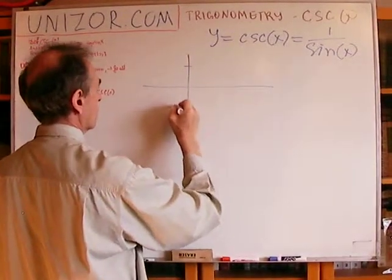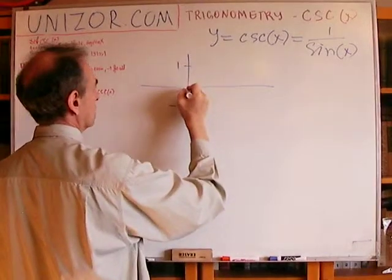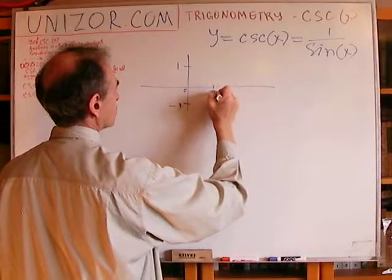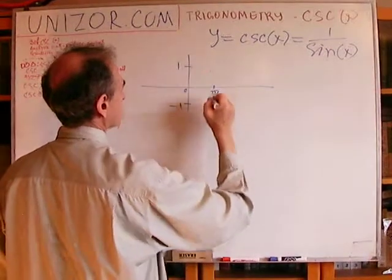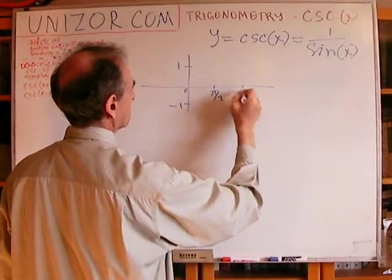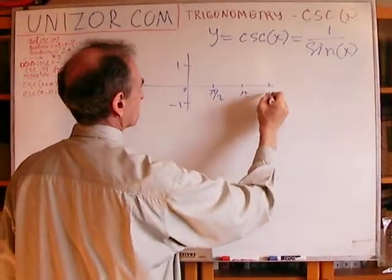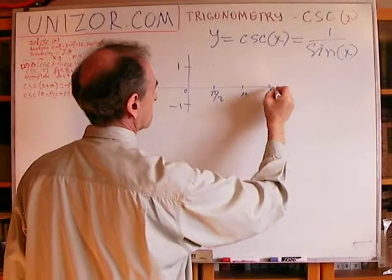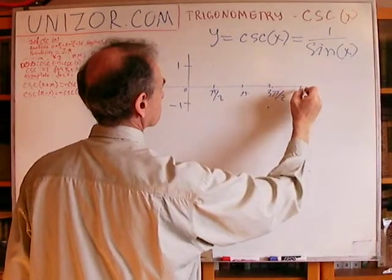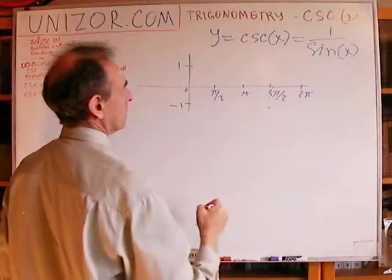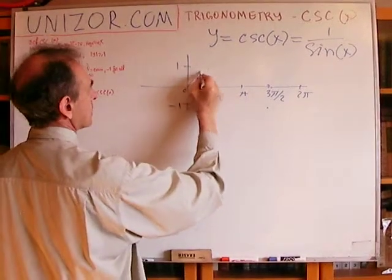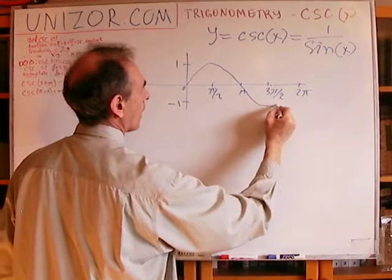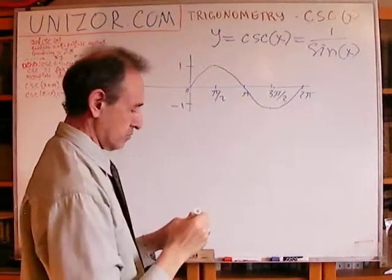We know it's from minus 1 to 1. At 0, it's 0. Then at π/2, it reaches its maximum. At π, it goes to 0. At 3π/2, it goes to minus 1. And at 2π, it ends up at 0 again. So that's how the sine behaves.